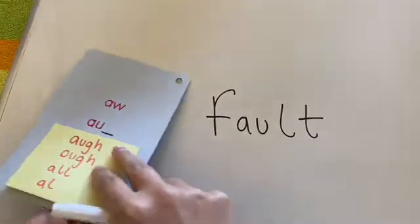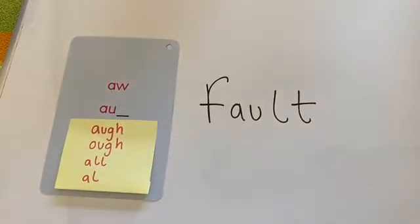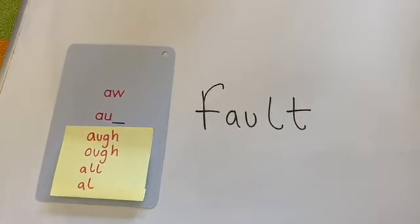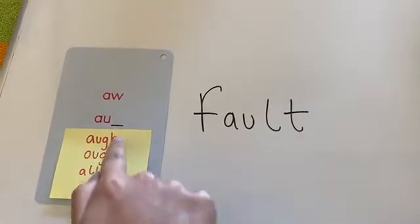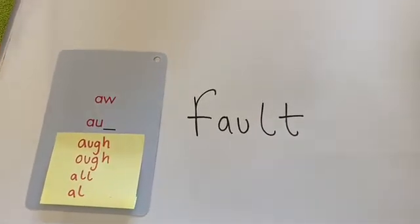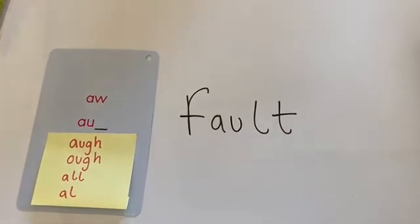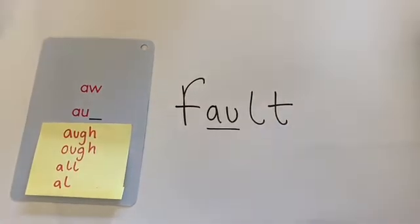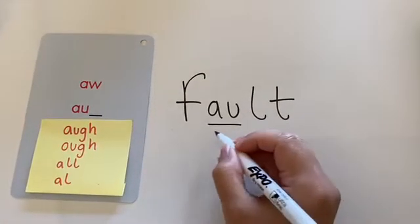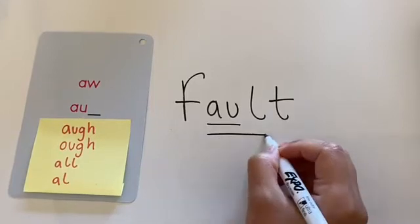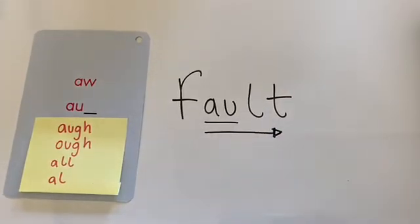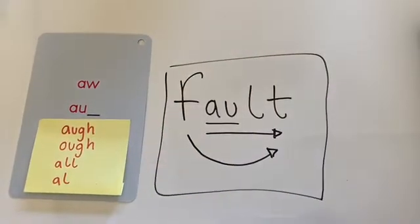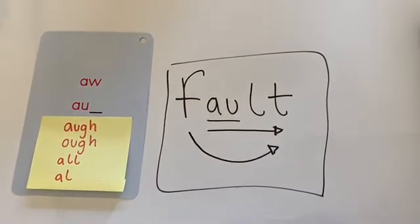So first step, I'm going to find my spelling pattern. I see a different spelling pattern here — I see A-U blank. We know that in these blanks we put our consonants, and I see that L is going to fill in my blank. This makes aw. We're going to slide right — alt, alt — add the beginning sound. Fault. Say it fast: fault. My word is fault. Great job.